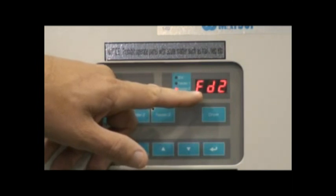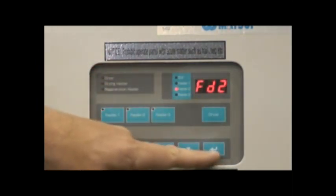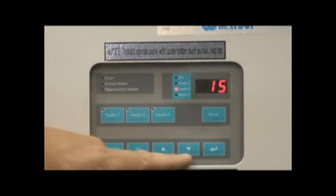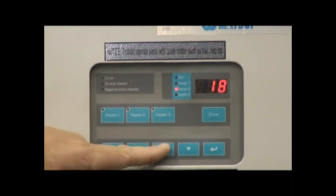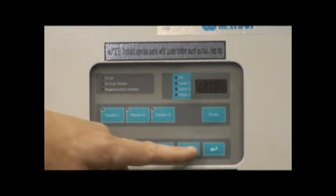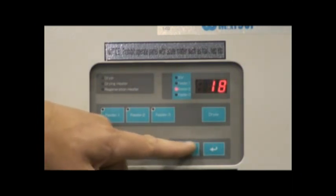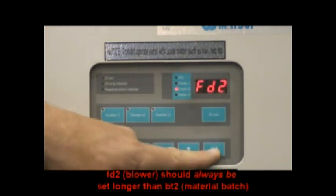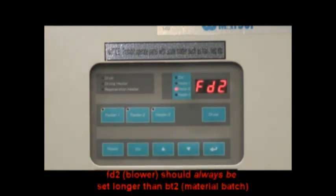The FD2 or feeder 2 setting is the blower on time for the feeder 2, which typically loads from the dryer to the injection machine. However, for this setting, we need to consider how much time will be needed to sweep the line clean after each material batch.